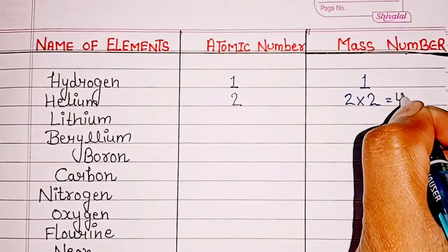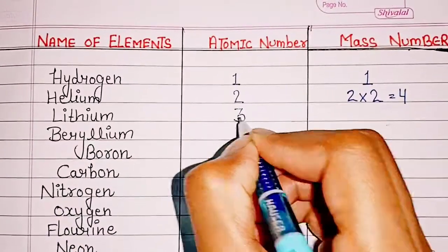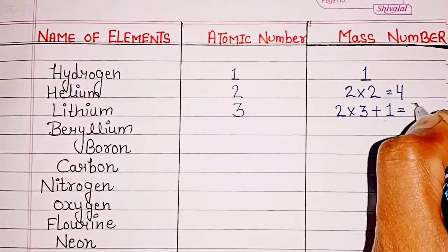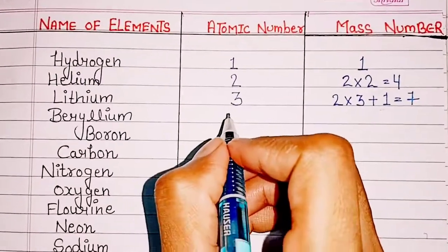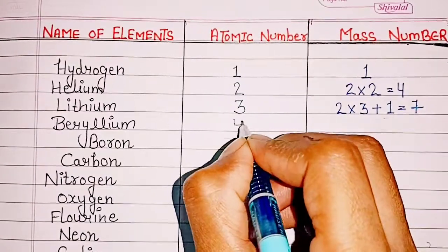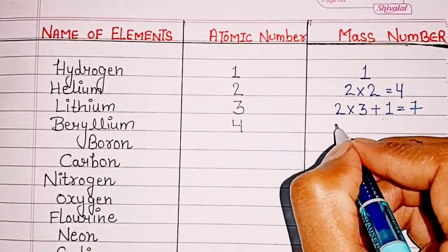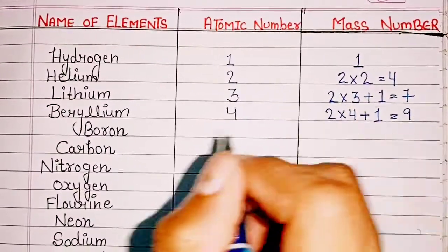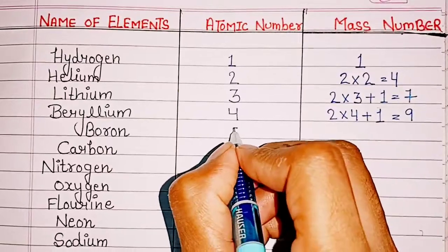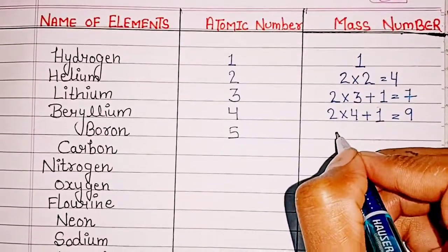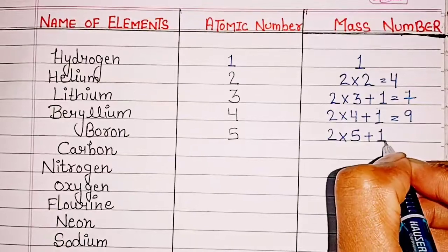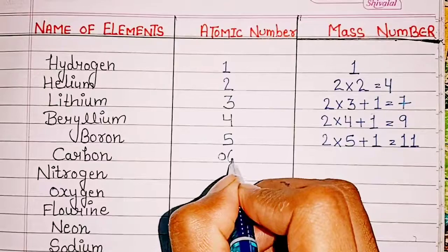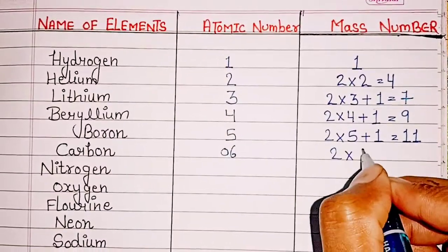Helium mass number: 2 x 2 = 4. Lithium: atomic number 3, mass number 2 x 3 + 1 = 7. Beryllium: atomic number 4, mass number 2 x 4 + 1 = 9. Boron: atomic number 5, mass number 2 x 5 + 1 = 11.